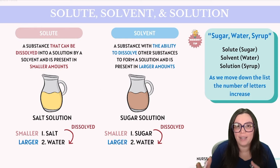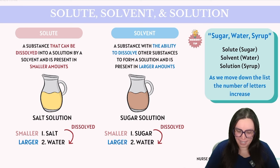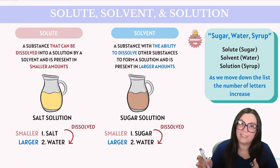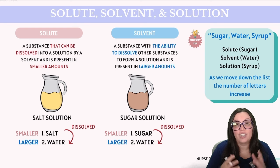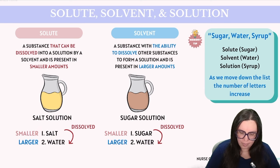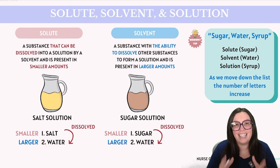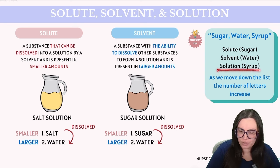Let's examine solutes and solvents using a salt solution and a sugar solution. In both cases, these solutions consist of two components: salt and water, or sugar and water. Both salt and sugar can be dissolved in water and are present in smaller quantities compared to the water itself. Therefore, a solute is defined as a component of a solution that can be dissolved and is present in smaller amounts. Conversely, a solvent is defined by its ability to dissolve substances and is present in larger amounts. An easy memory trick: sugar, water, syrup — where the solute is sugar, the solvent is water, and the solution is syrup.